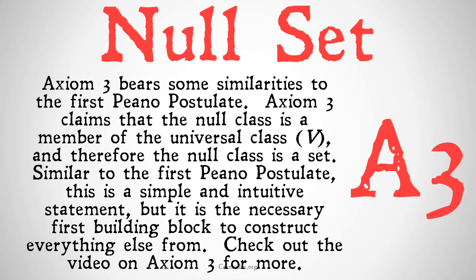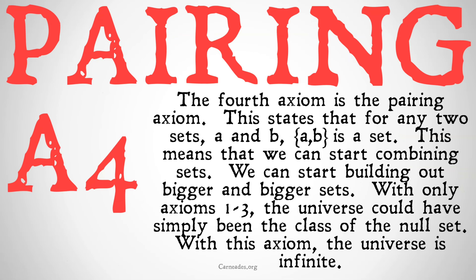Axiom 3 is quite simple, and it bears some similarities to the first Piano postulate. Axiom 3 claims that the null class is a member of the universal class and therefore a set. Similar to the first Piano postulate, this is a simple and intuitive statement, but it's a necessary first building block to construct everything else from. Check out our video on axiom 3 for more.